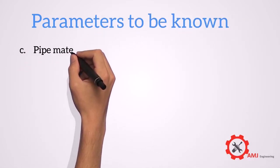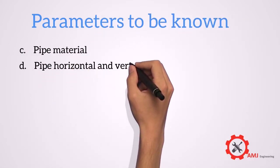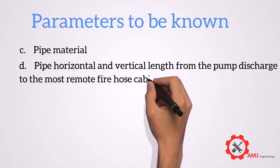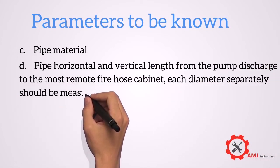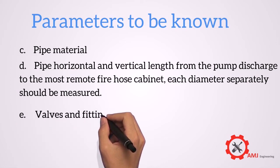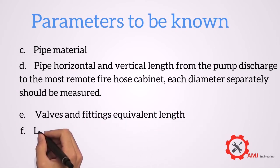Pipe material, pipe horizontal and vertical length from the pump discharge to the most remote fire hose cabinet. Each diameter separately should be measured. Valves and fittings equivalent length. Discharge flow.